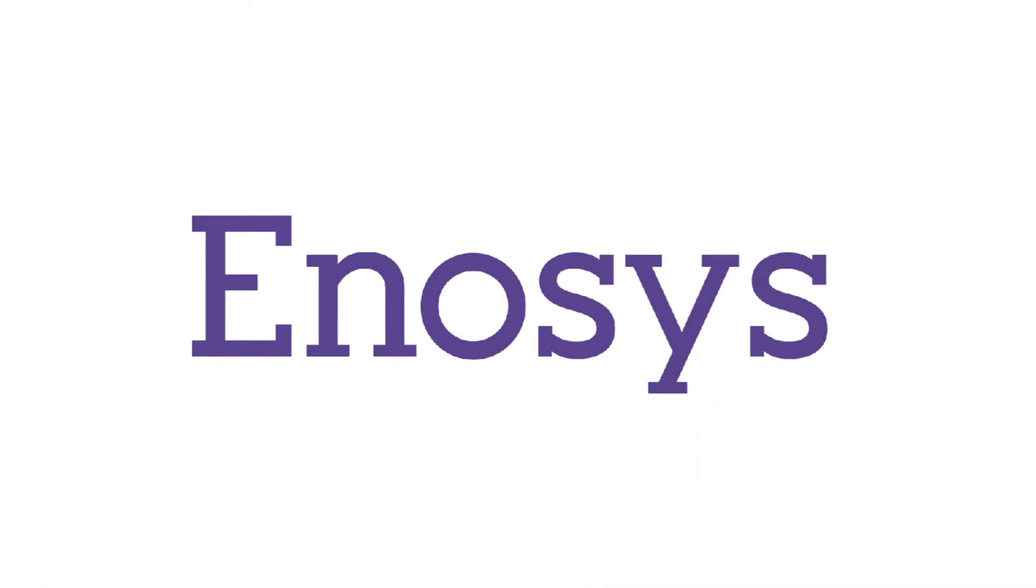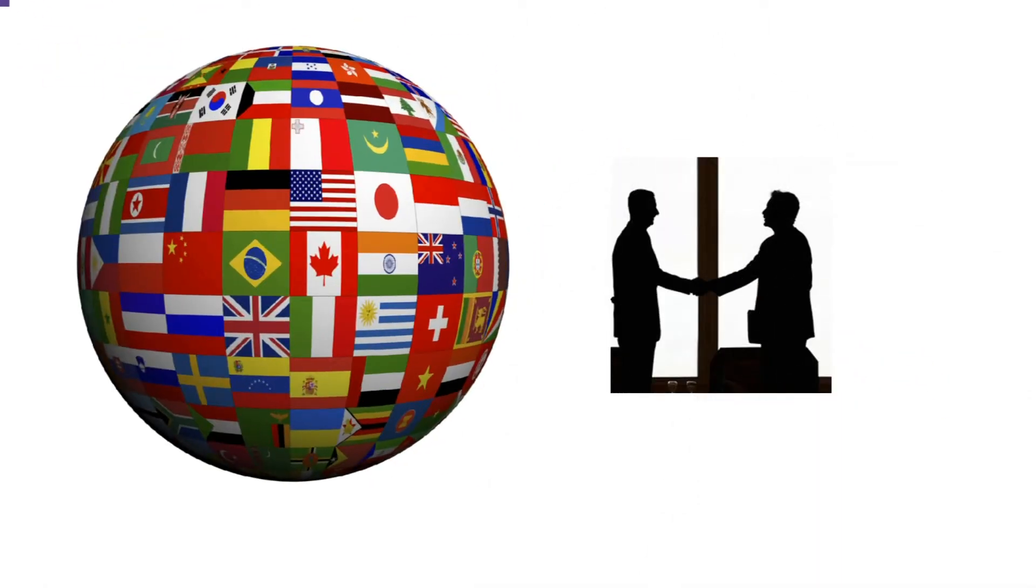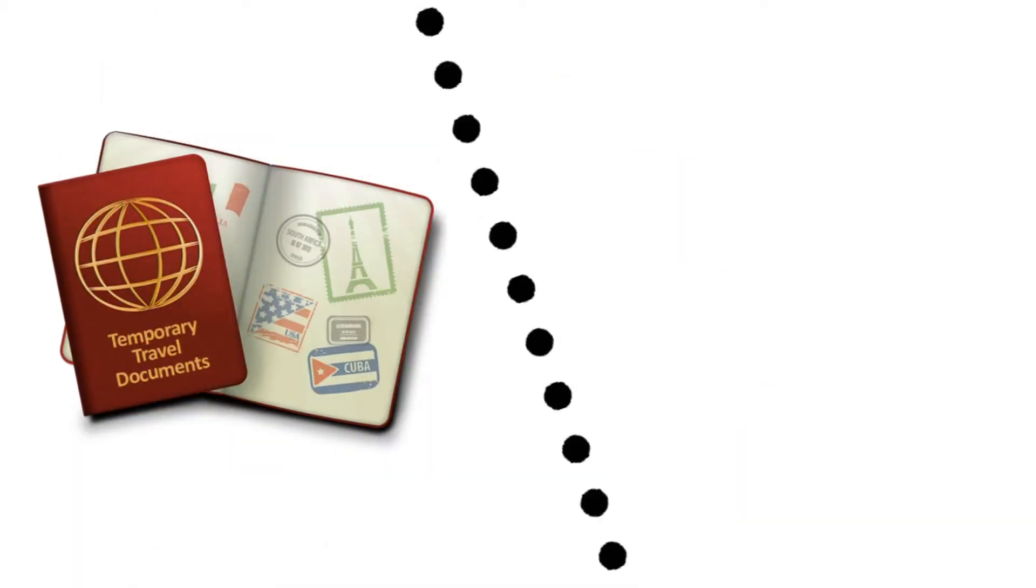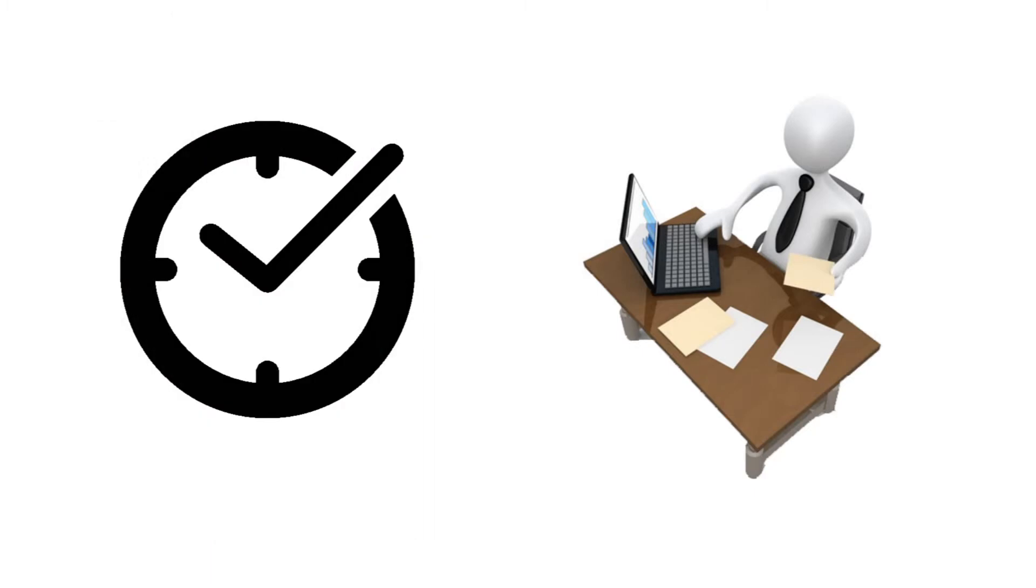With Enosis, diplomatic missions worldwide can now easily and securely issue temporary travel documents to migrants returning to their home country and share the information with home border controlling systems and any other relevant authorities in real time.